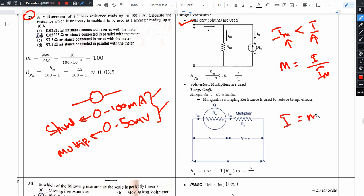i is equal to m times i_m. The multiplying factor uses the shunt resistance. This shunt resistance should be smaller than the meter resistance. R shunt is always less than R meter. Shunt resistance will be bypassed by current because current takes the minimum resistance path.